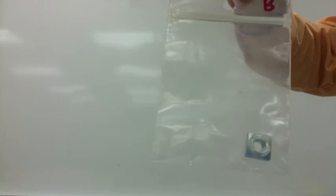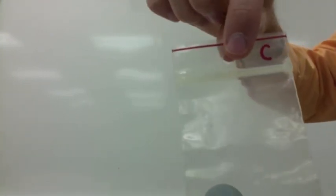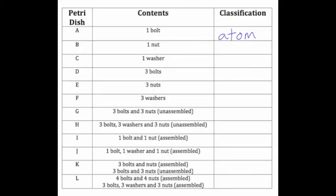In bag B, there's just one nut. In bag C, there's a washer. Both B and C can best be described as atoms.